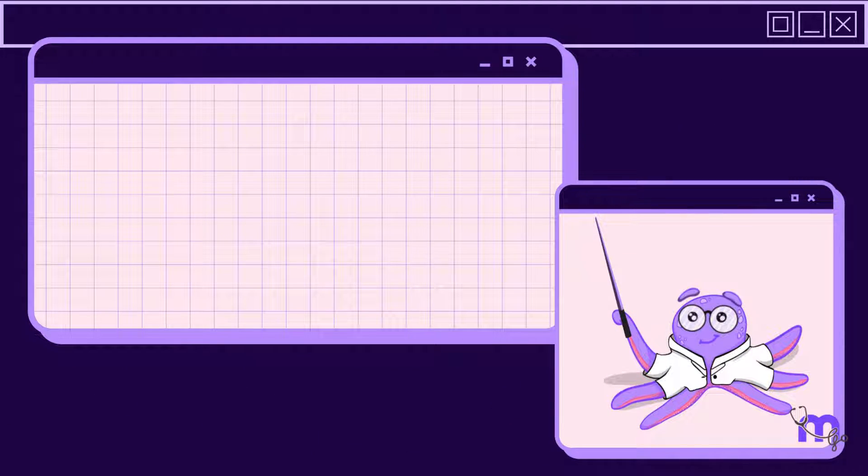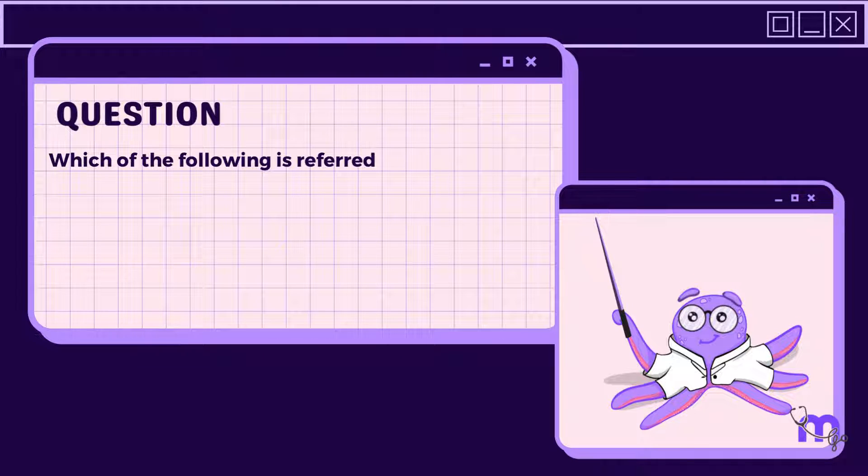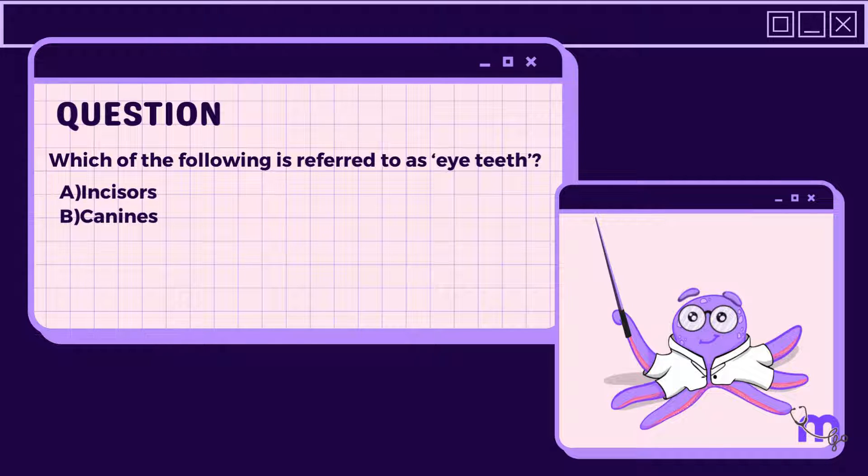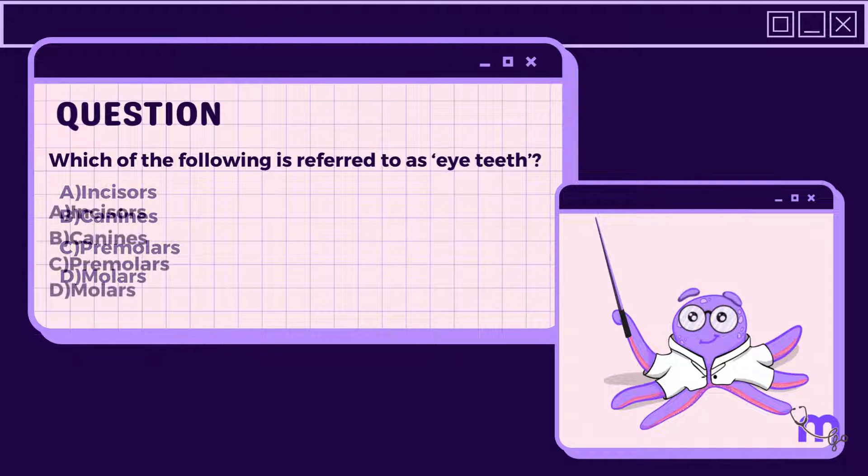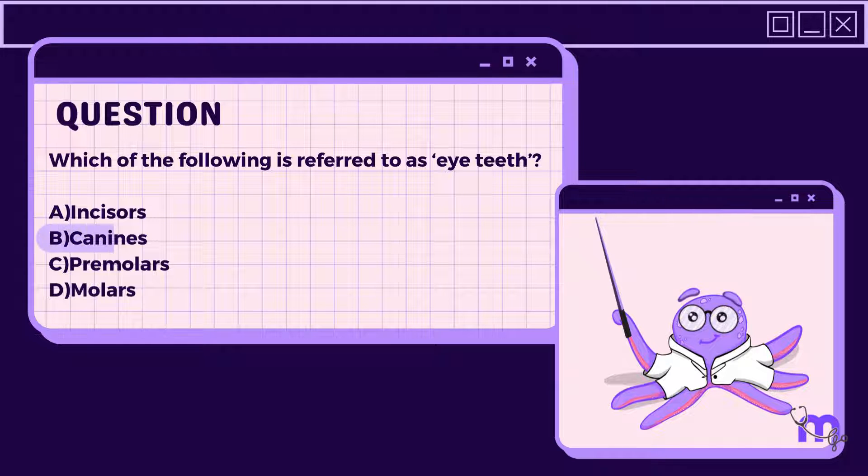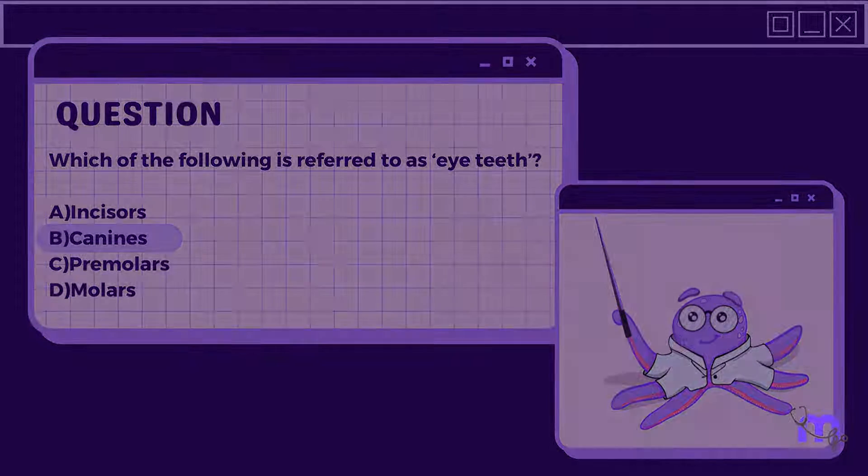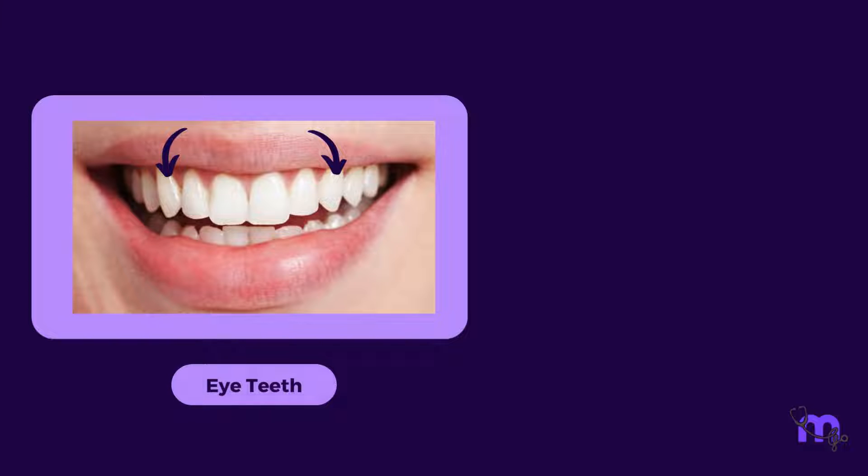Now try to answer this question. Which of the following is referred to as eye teeth? Correct answer is option B. Canines. Canines are often referred to as eye teeth, featuring a single prominent cusp on their crown.